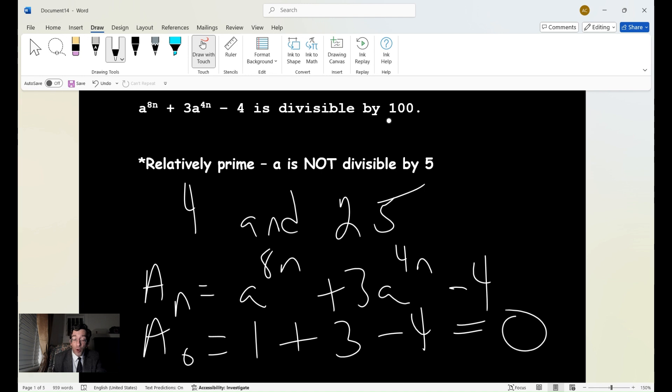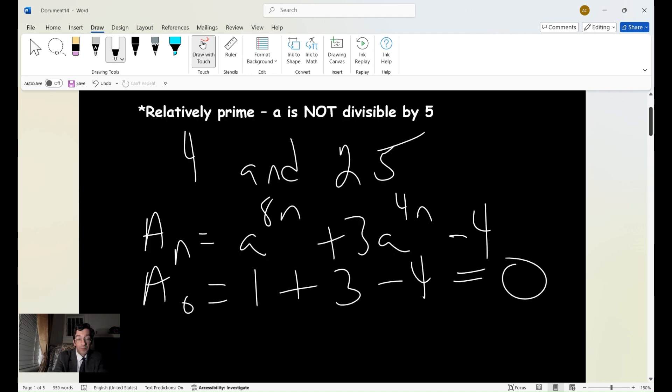And it's also divisible by 100. So n, in either case, n has to be greater than or equal to 1, always positive. Now, we have to show that A_n is divisible by 4 and divisible by 25. So really, we have, in reality,